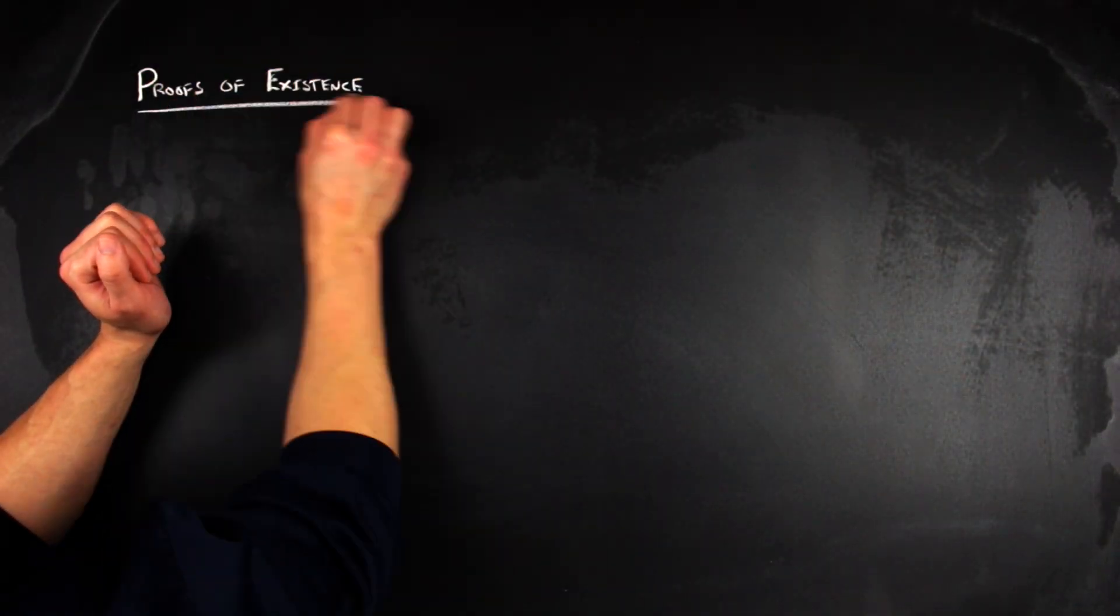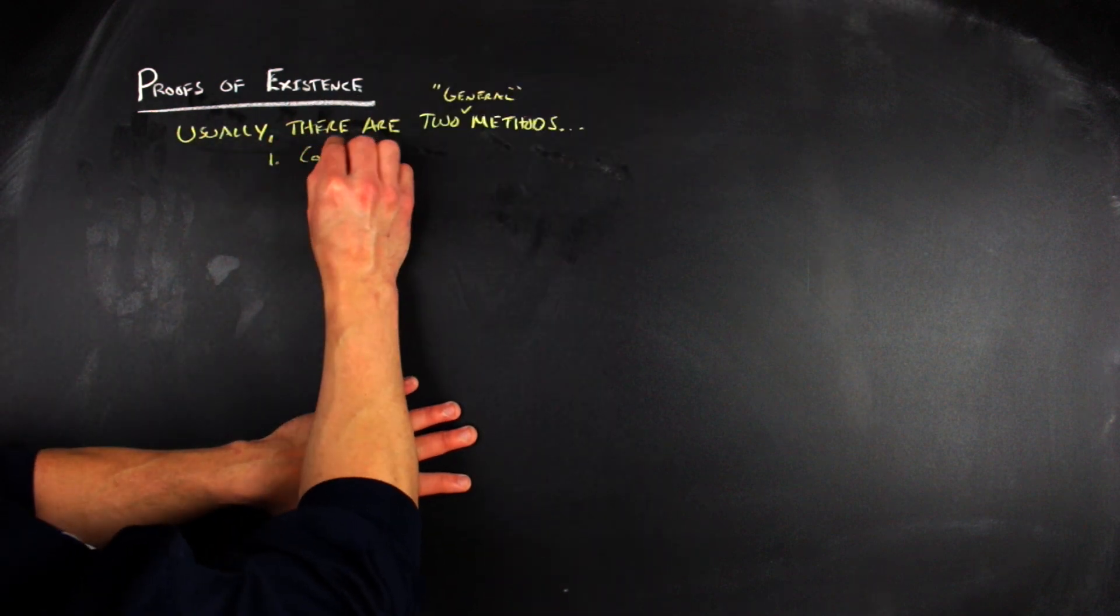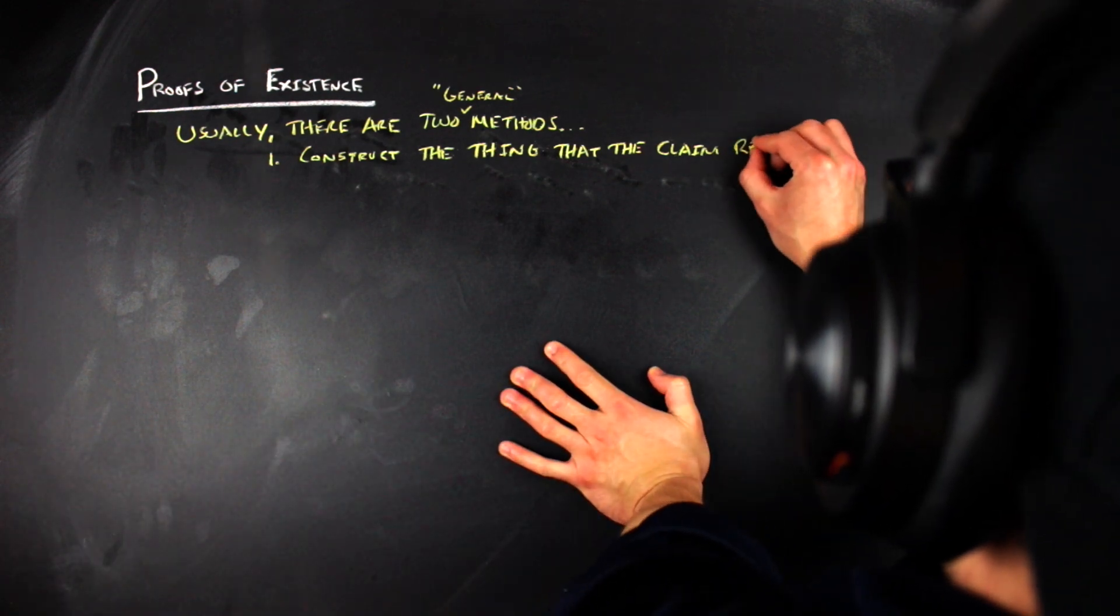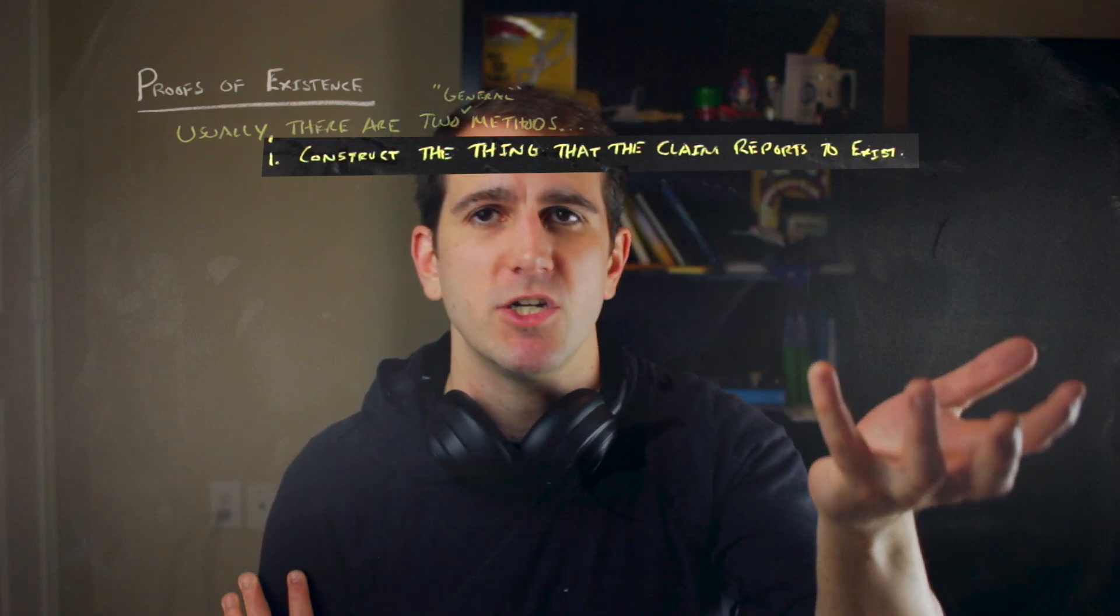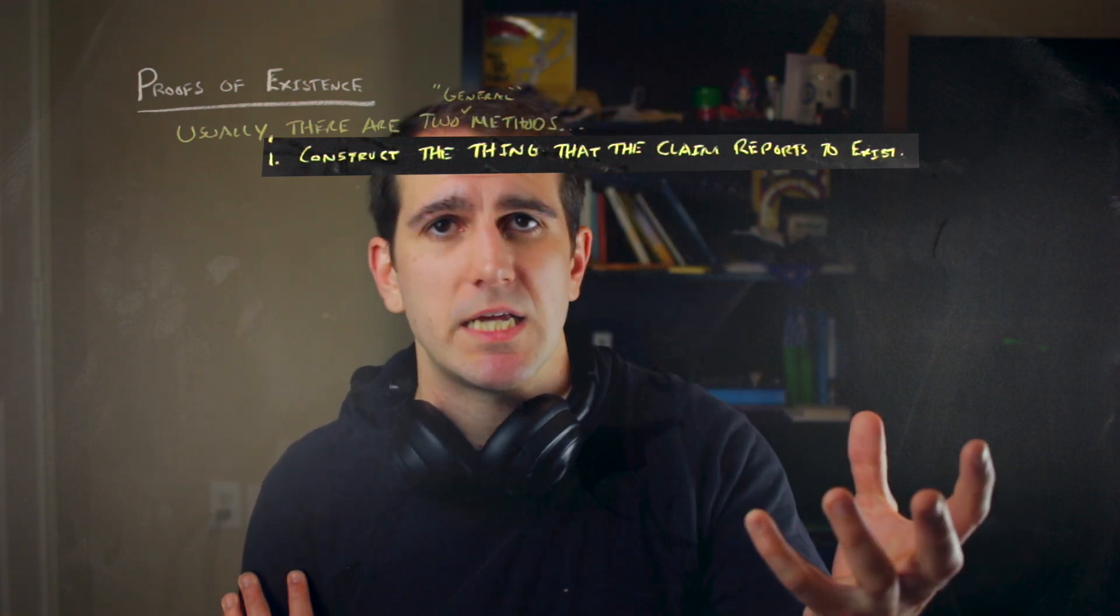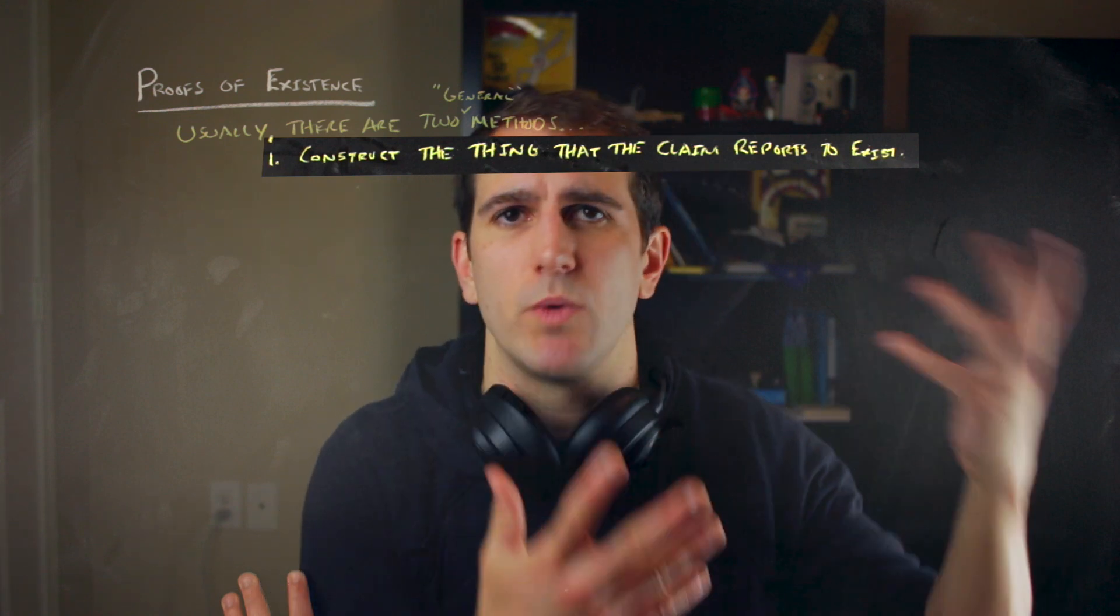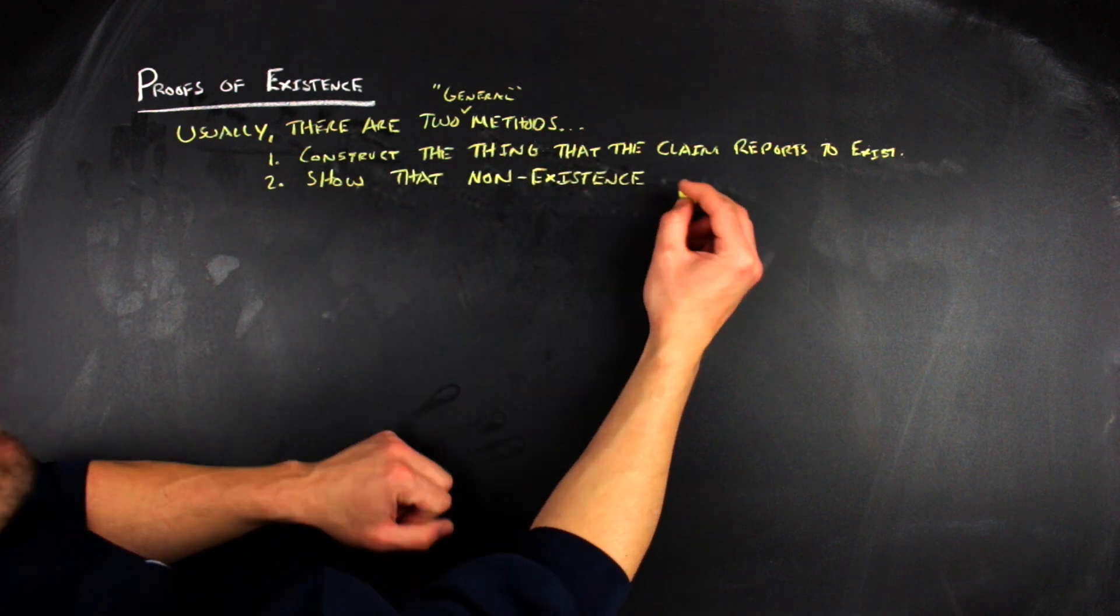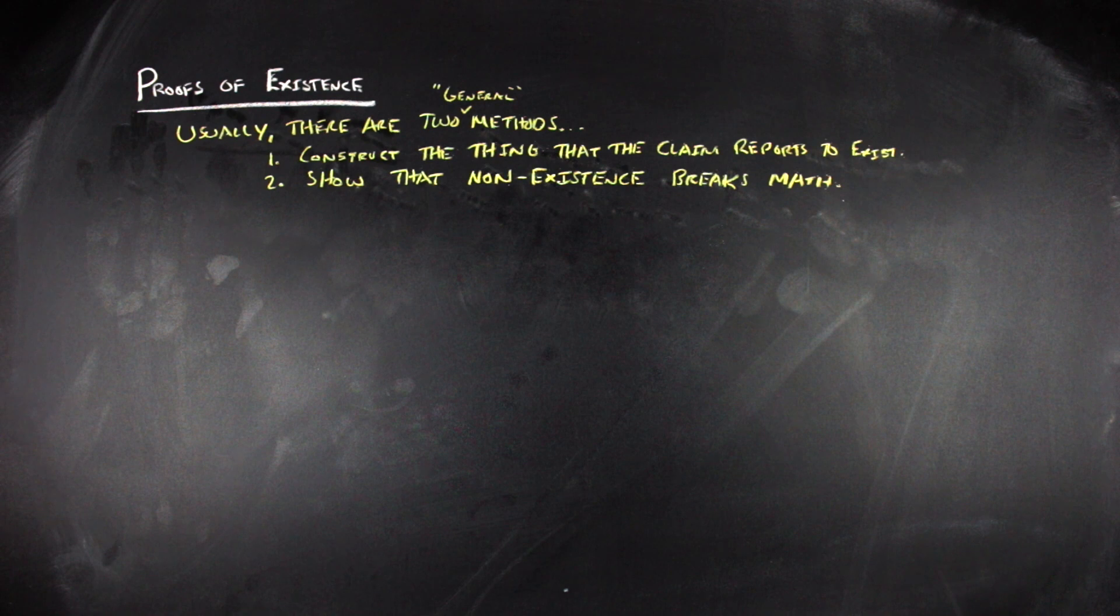So generally speaking, there are two methods of proof when it comes to working with existence arguments. The most natural thing is to construct the thing that the claim reports to exist. The proof may not be constructive, but it will give you some process that is deliberate in showing that you can make a thing that has this property. And then the second way is just to say, well, if you don't have this thing in math, it breaks math. So in order to illustrate this, I want to go through two examples.